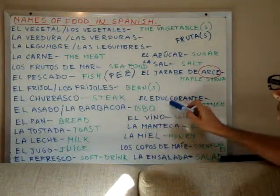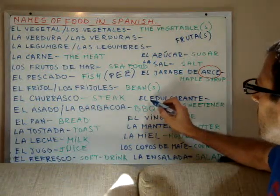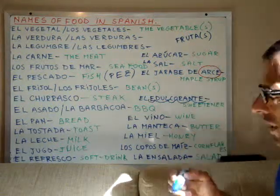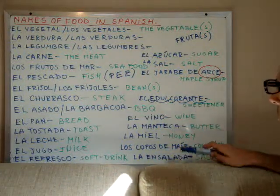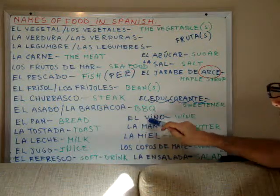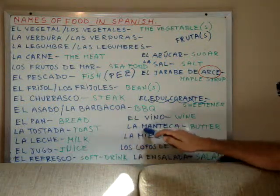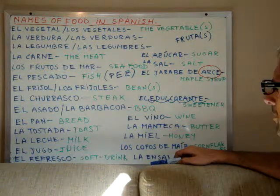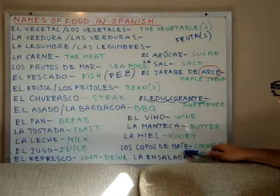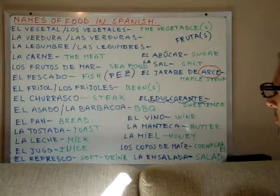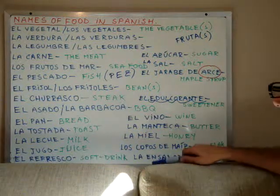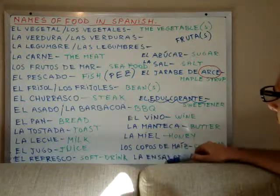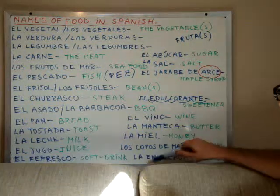El edulcorante — that has five syllables — means the sweetener. El vino is wine. La manteca is butter. La miel is honey. Los copos de maíz are cornflakes. And salad in Spanish is ensalada — ending in A, so it is a feminine word: la ensalada, or las ensaladas for the plural.